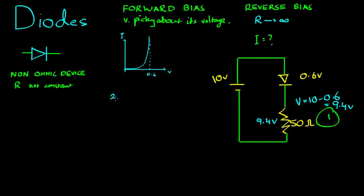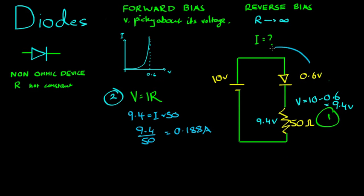The second step is to extrapolate from there, using Ohm's law, V equals IR, for this particular component here. The voltage equals 9.4, which equals the current multiplied by 50. So 9.4 over 50 is equal to 0.188 amps.